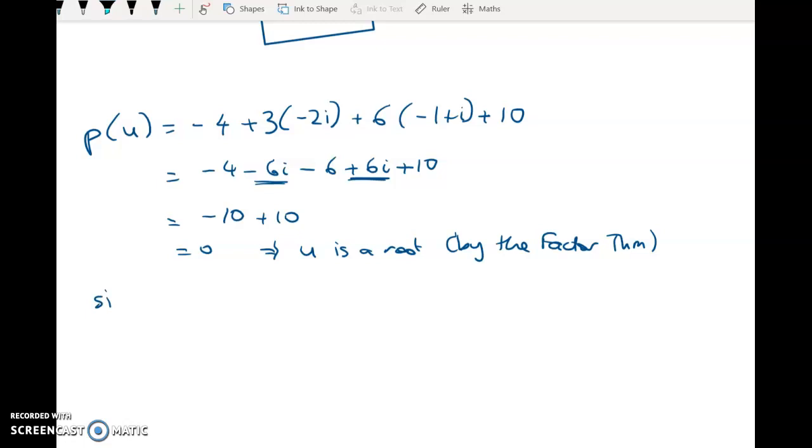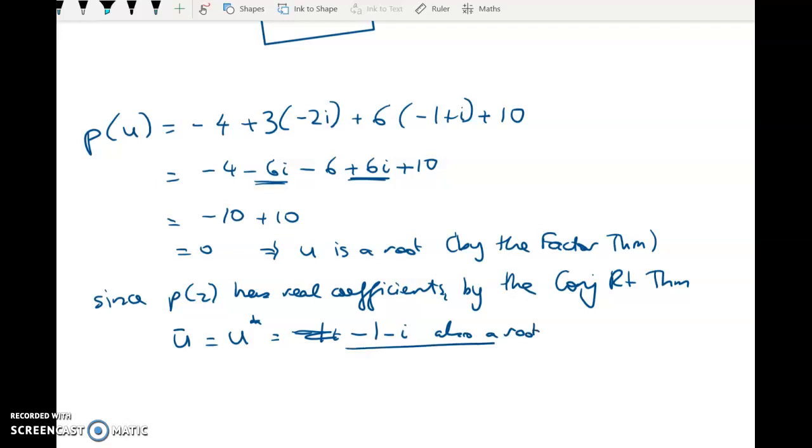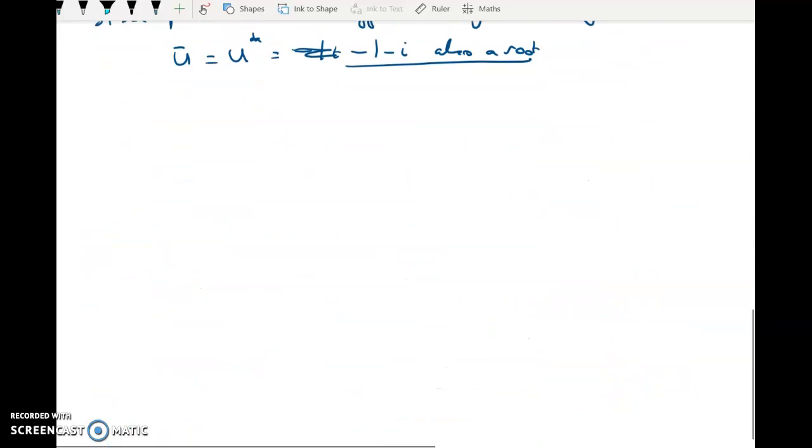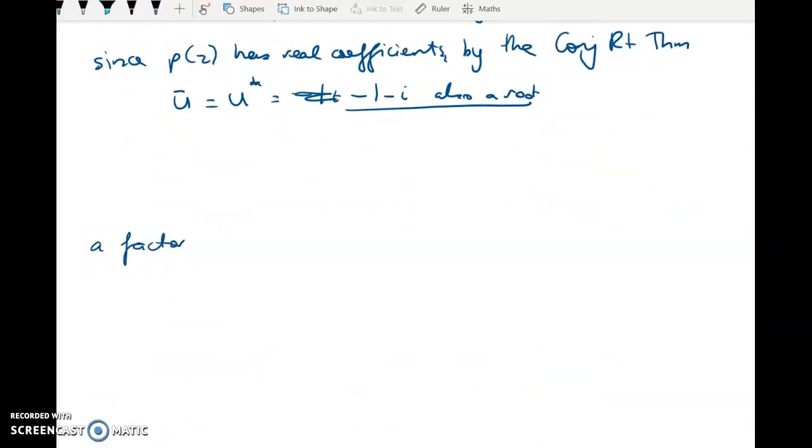All right so since p of z has real coefficients, the conjugate root theorem applies and that means we know that u bar or u star in Cambridge notation is also a root so negative 1 minus i is also a root. So that means going back to here we know two of the roots and we're going to now put those together to get one quadratic factor and then we're going to go ahead and factorize. So a factor is this and we've done this lots of times but some of you are still not fluent enough in this skill.